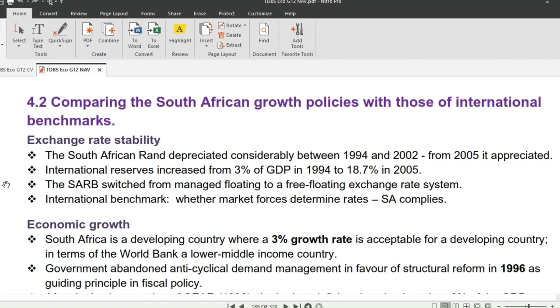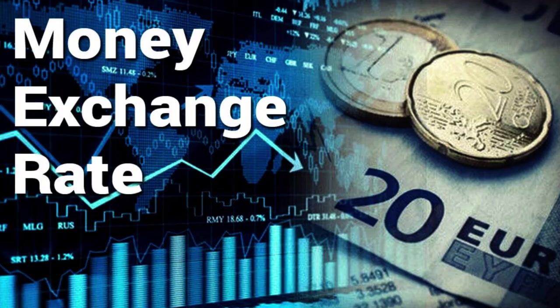A free floating exchange rate system is one in which a currency's value is allowed to fluctuate according to demand and supply forces in a foreign exchange market. A managed floating exchange rate system is one in which exchange rates fluctuate from day to day, but central banks attempt to influence their country's currencies by buying and selling. When a central bank buys its own currency, it increases demand for it, which causes it to appreciate.